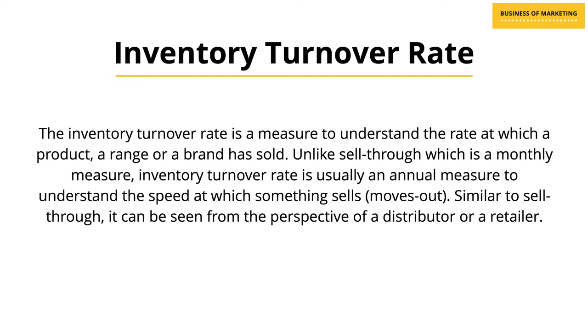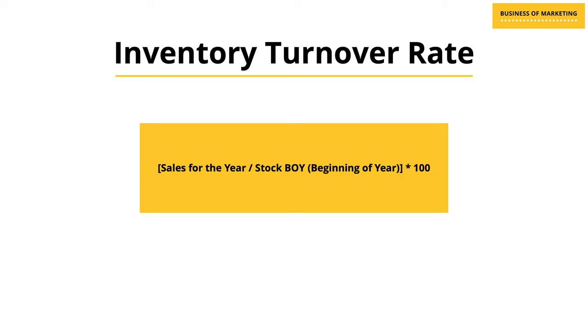There is another important measure very similar to the sell through rate, called the inventory turnover rate. The inventory turnover rate is a measure to understand the rate at which a product, a range, or a brand has sold. Unlike sell through, which is a monthly measure, inventory turnover rate is usually an annual measure to understand the speed at which something sells or moves out. Similar to sell through, it can be seen from the perspective of a distributor or a retailer. You take the sales for the year, divide by the stock at the beginning of the year, multiply by 100, and you get the inventory turnover rate.